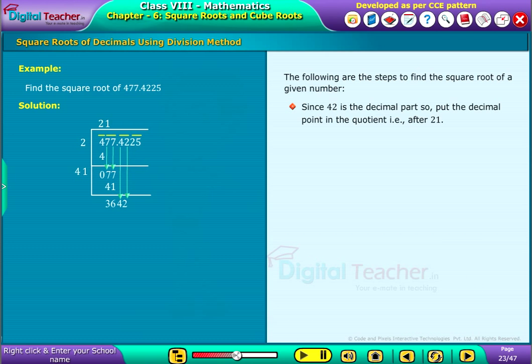Since 42 is the decimal part, put the decimal point in the quotient that is after 21. Now, the number obtained is 3642.